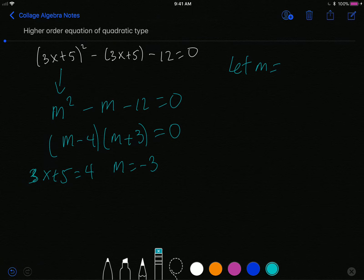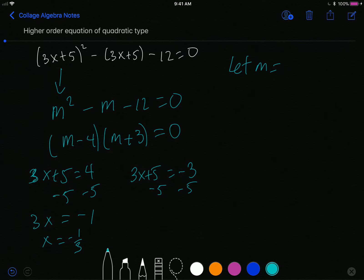I do the same thing on the other side. Let me give myself some room. I'll give myself some room right here. And so this m will change out to become a 3x plus 5. And then I solve my basic equation. Subtract 5, subtract 5. And so 3x is equal to negative 1. And divide by 3, so x equals negative 1 third. Similarly over here, subtract 5, subtract 5. So 3x equals negative 8. And so x equals negative 8 thirds. And so by doing the substitution, m equals 3x plus 5, and then simplifying from there, you get an equation right here.